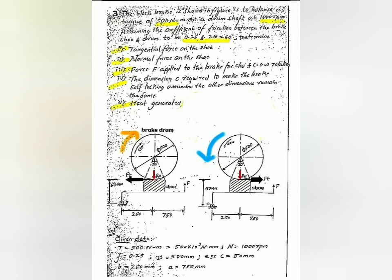Since there is a contact surface between the brake drum and the shoe, friction exists at that interface. Therefore, the tangential force Ft can be written as the normal reaction force RN multiplied by the coefficient of friction f. Using that relation, you can find the reaction force RN.